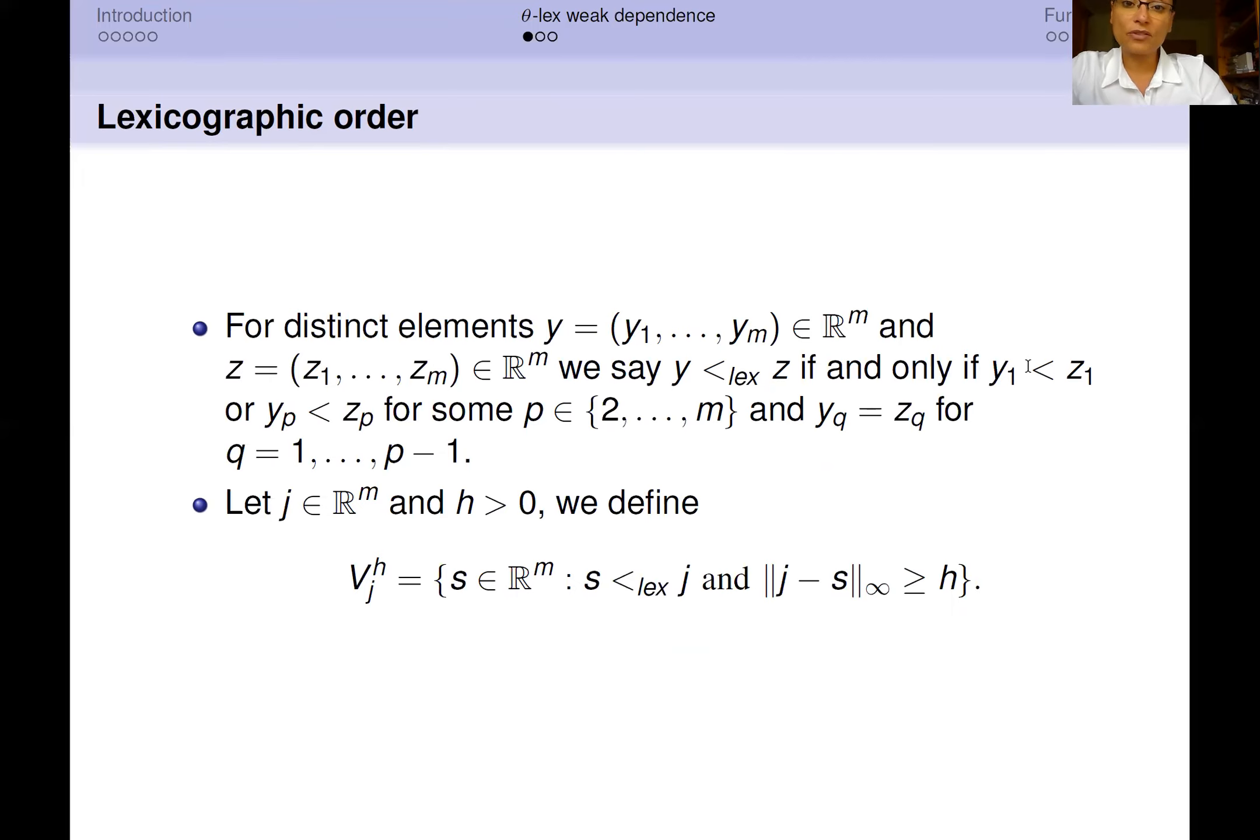the first component of the vector y_1 is less than the pth component of the vector z for some p that goes from 2 to m, and for q that goes from 1 to p-1, the element y_q is equal to the element z_q of the two vectors.